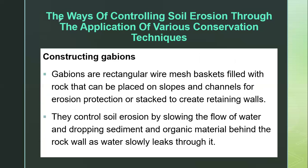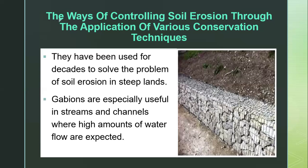The other method is constructing gabions. Gabions are rectangular wire mesh baskets filled with rocks that can be placed on slopes and channels for erosion protection or as retaining walls. They control soil erosion by slowing the flow of water and depositing sediment and organic material behind the wall as water slowly leaks through. Gabions have been used for decades to solve soil erosion problems on steep slopes and are especially used in streams and channels where higher water flows are expected.